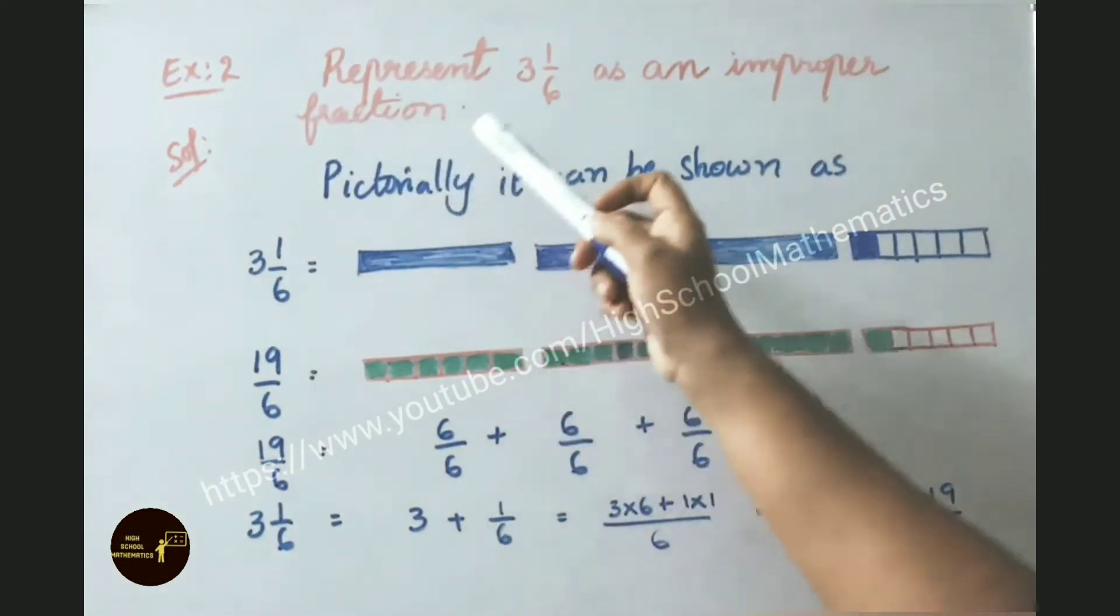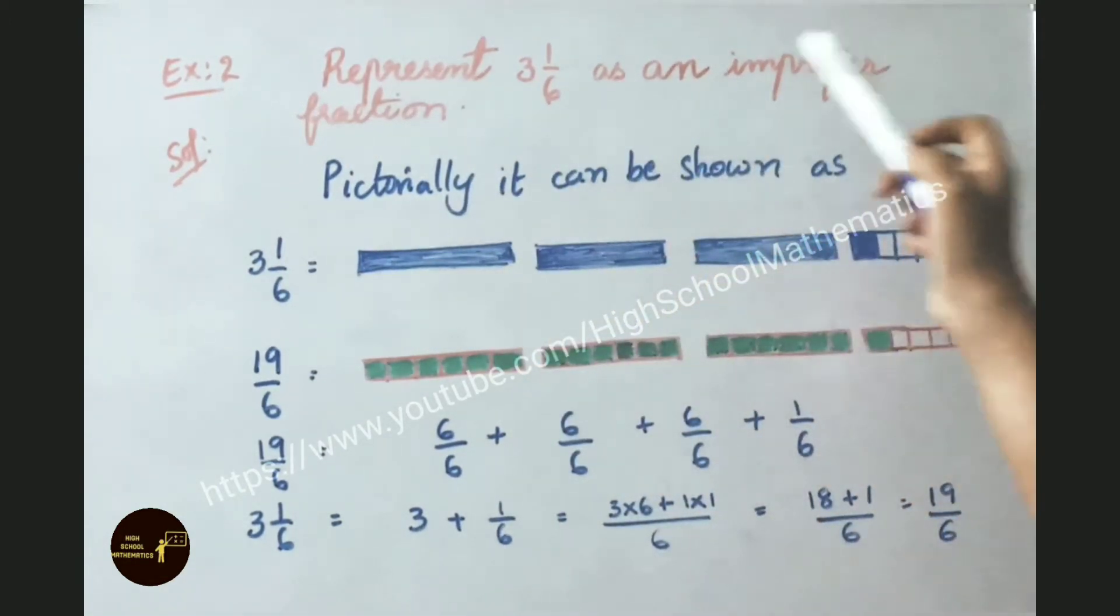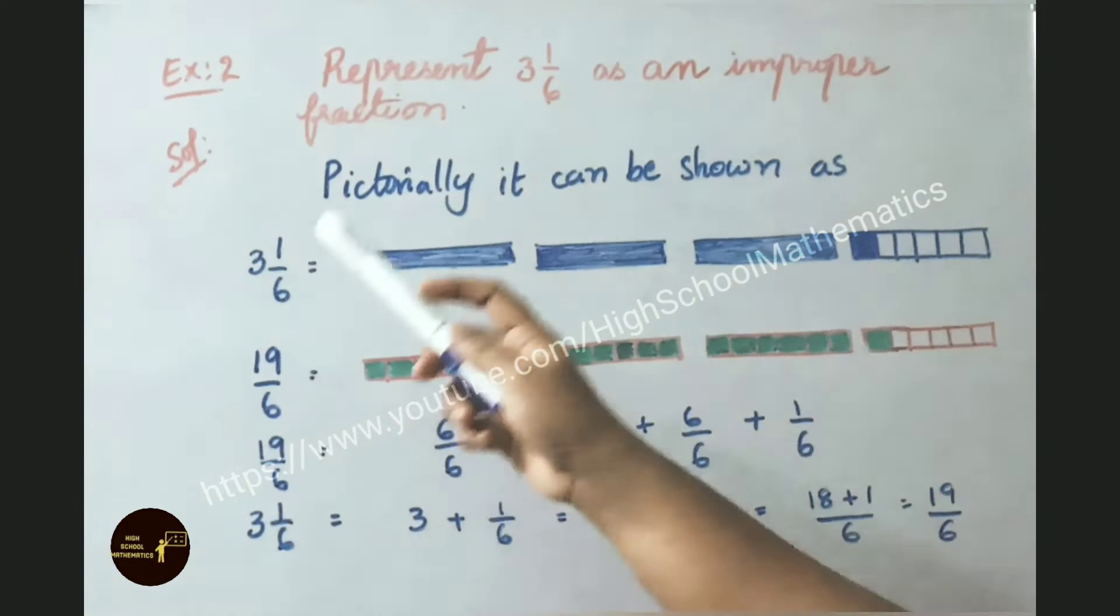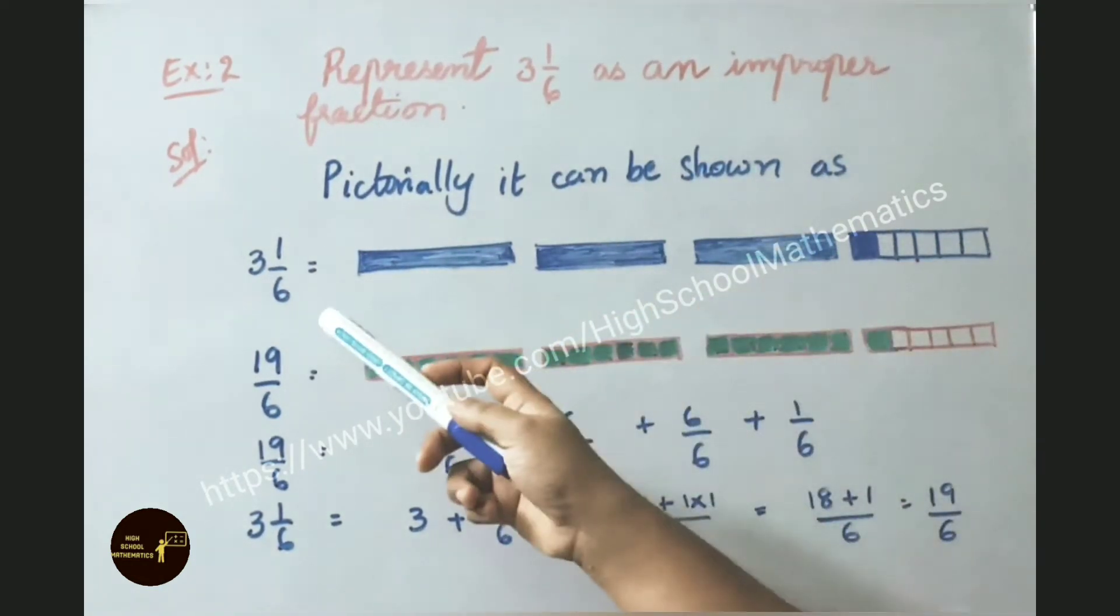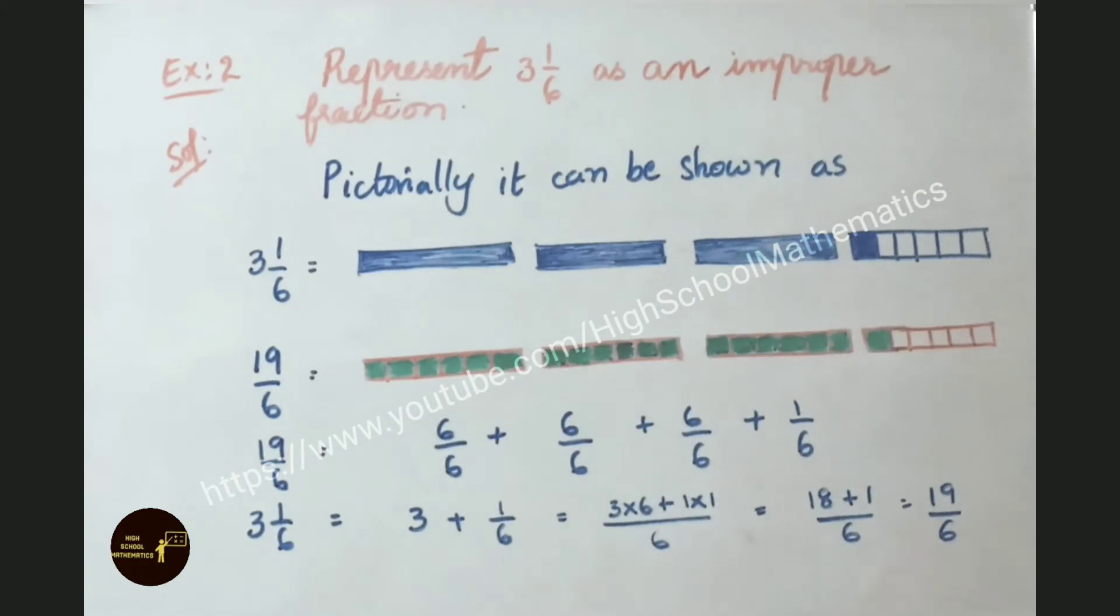See now example 2: represent 3 and 1 by 6 as an improper fraction. Let us see the solution now here. Pictorially it can be shown as 3 and 1 by 6 in this way. 3 whole parts and 4th, 1 out of 6, 1 is shaded. 3 and 1 by 6 we have represented in pictorial way.